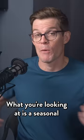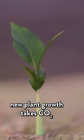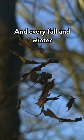What you're looking at is the seasonal variation in plant growth. Every spring and summer, new plant growth takes CO2 out of the atmosphere through photosynthesis, and every fall and winter, as plants die or drop their leaves, that CO2 is released back into the atmosphere.